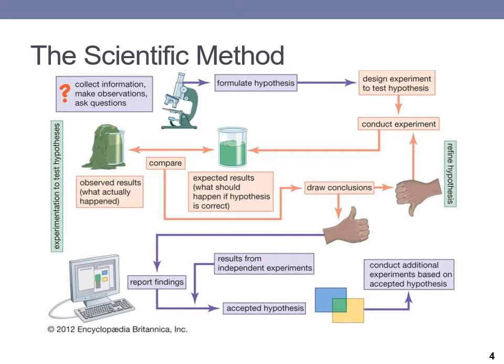Next, we make predictions based on our hypothesis. For example, if I replace the batteries in the remote, it will work. We then conduct experiments to test our hypothesis. Experiments can take many years or several minutes, depending on what you are studying. The results of your experiments are observed and/or measured. These results should be recorded for later analysis and will either support or refute your hypothesis.